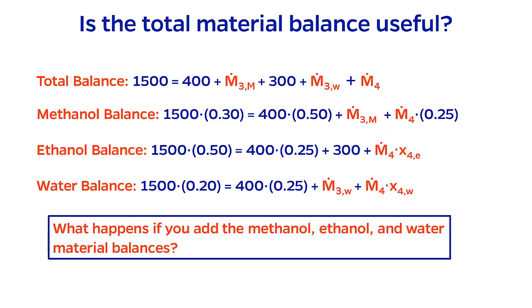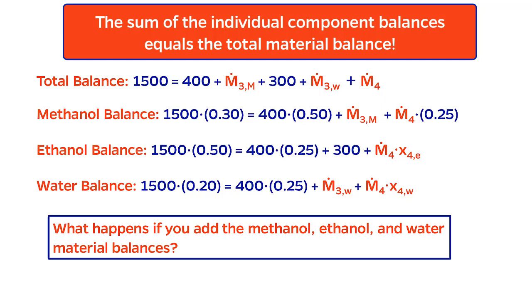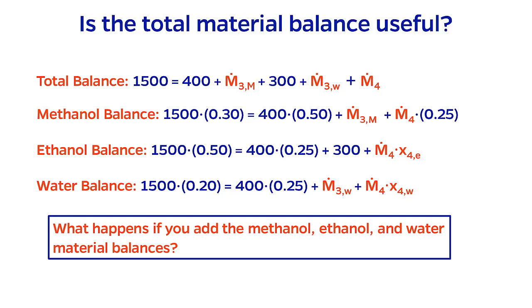However, notice what happens if you try to add the methanol, ethanol, and water material balances. Recall from earlier that the compositions of ethanol and water in stream 4 sum to 75%. Convince yourself that the sum of these three balances equals the total balance. And this makes perfect sense if you think about it, given that the total balance is the total by definition.